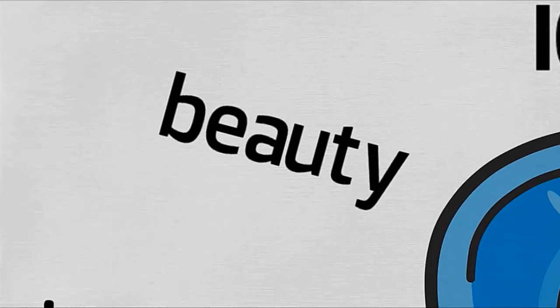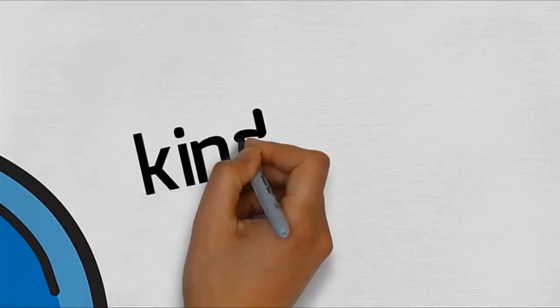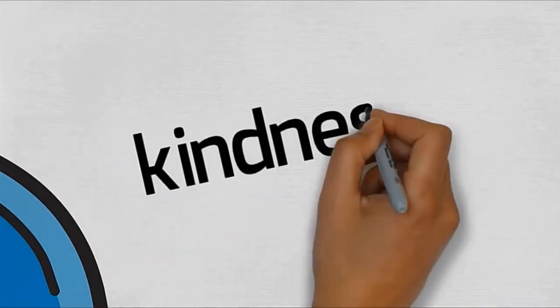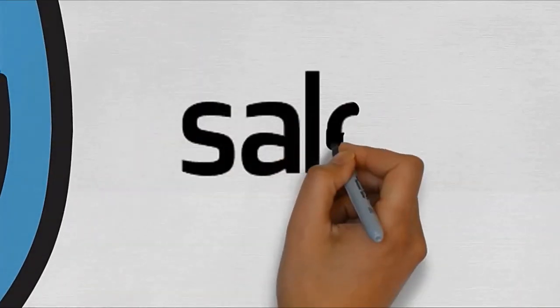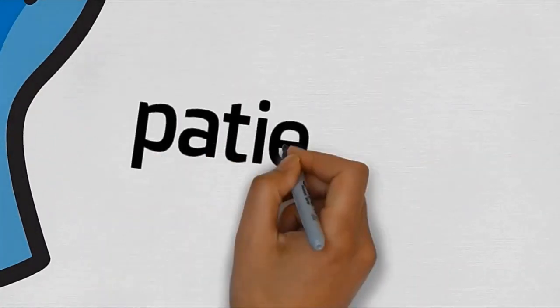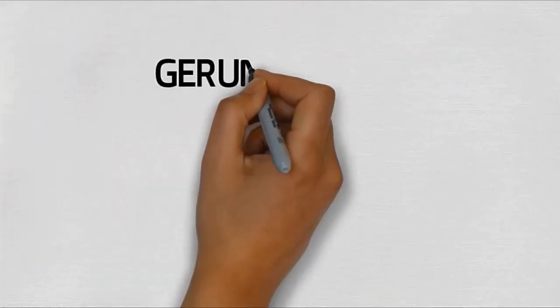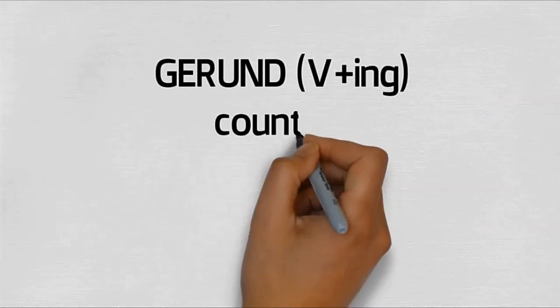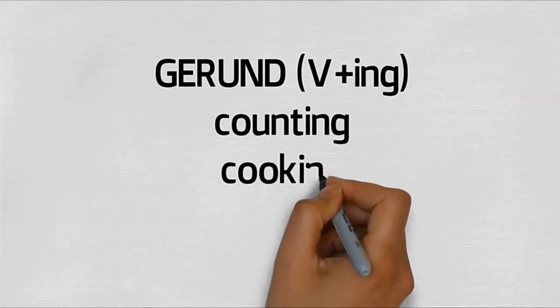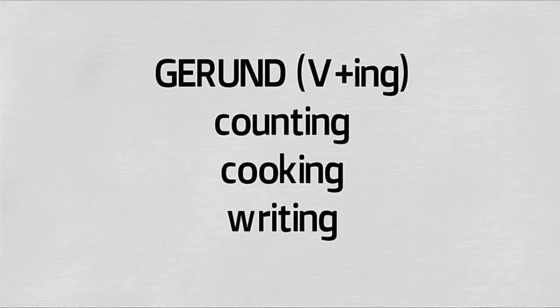Other examples include kindness (kebaikan), sale (penjualan), and patience (kesabaran). Nouns can also be formed through verb plus -ing, called gerunds. So counting, cooking, and writing function not as verbs but as nouns - counting means perhitungan, writing means tulisan.